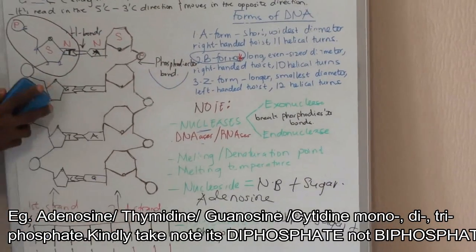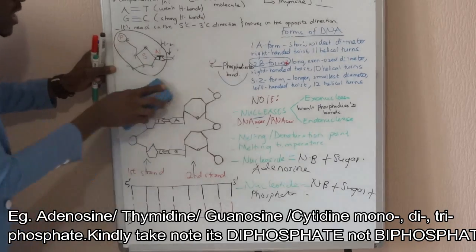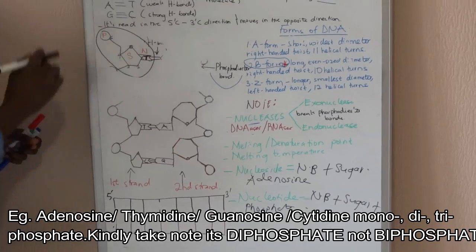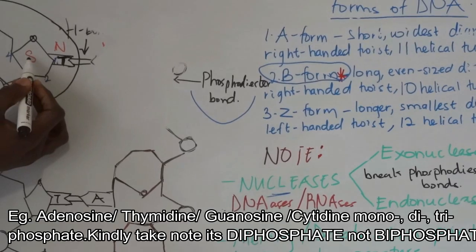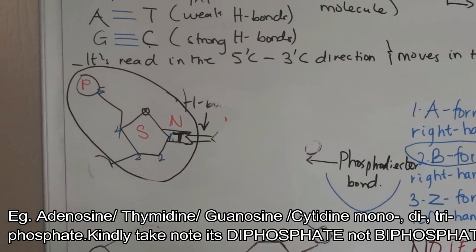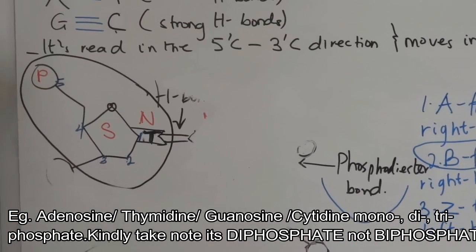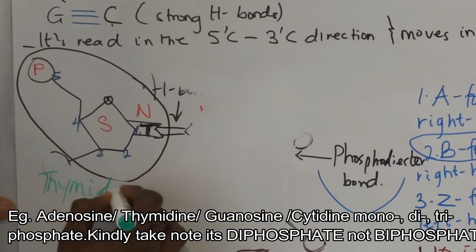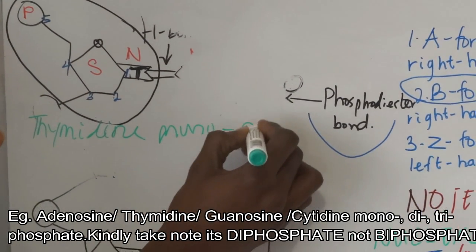When you take a typical nucleotide, it has the nitrogenous base, the sugar group, and the phosphate group. If there is just one phosphate group, we call it a monophosphate — for example, thymidine monophosphate.